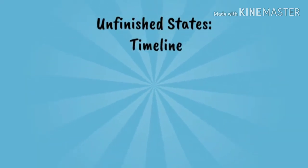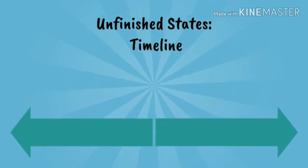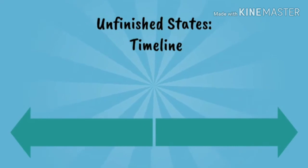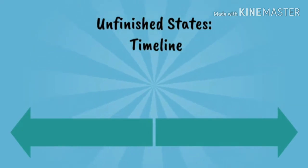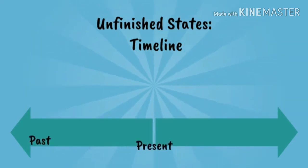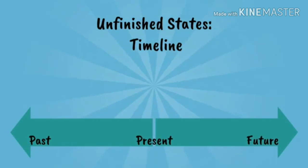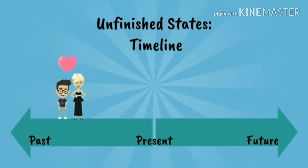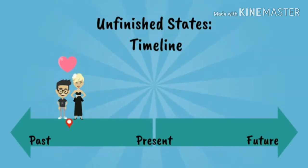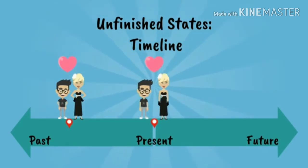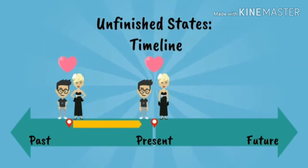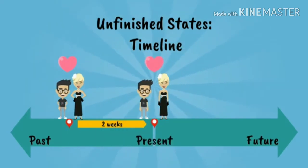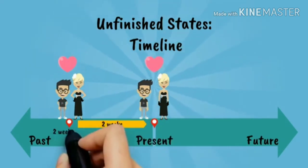Let's take a look at our timeline again so we can understand this better. On our timeline we have the past, present, and future. The boy met the girl at a certain point in the past, and they still know each other in the present, which is during their date at the restaurant. But they have known each other for two weeks, which means they met two weeks ago.